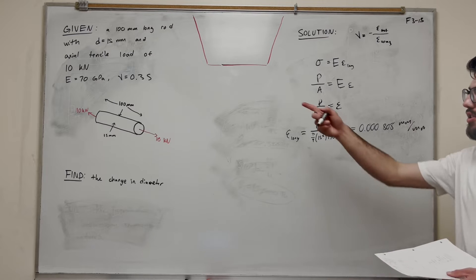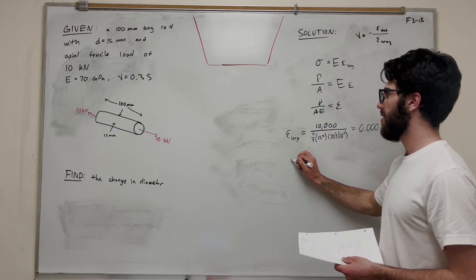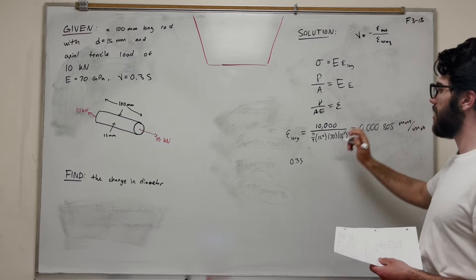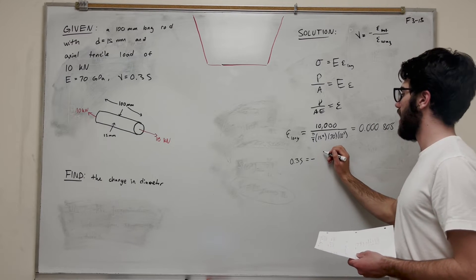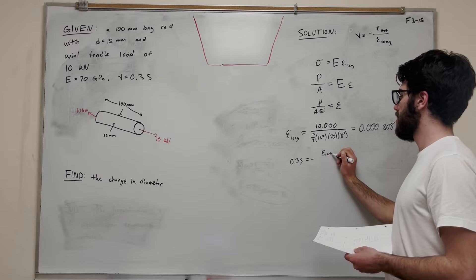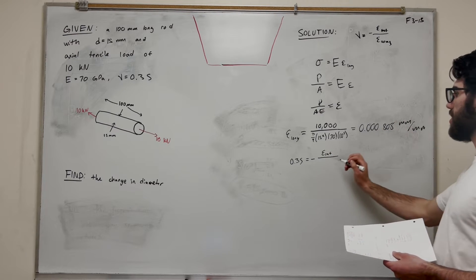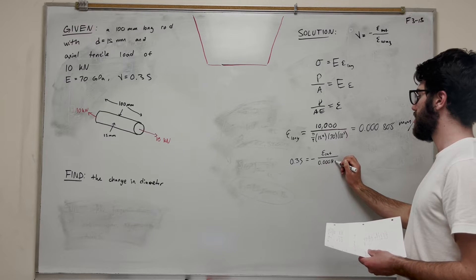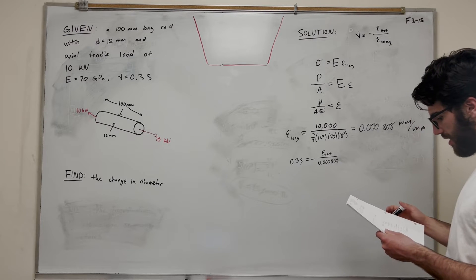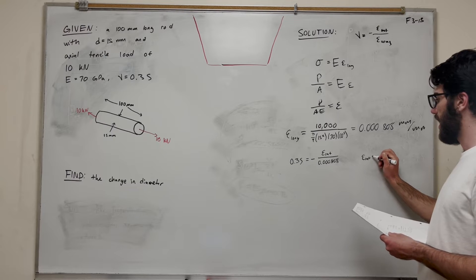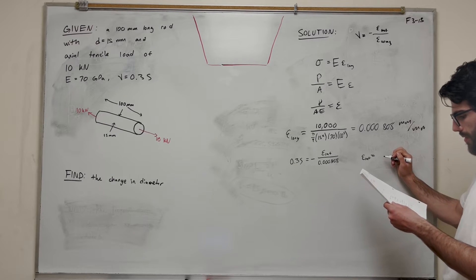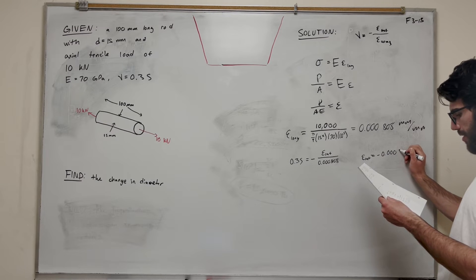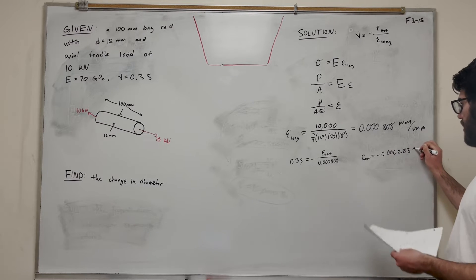So now we can use Poisson's ratio. Poisson's ratio 0.35, using this equation up here, is equal to negative epsilon lat over epsilon long, which is 0.0000808. Doing this, you get epsilon lat equals negative 0.0000283 millimeters per millimeter.